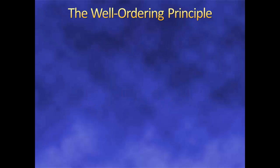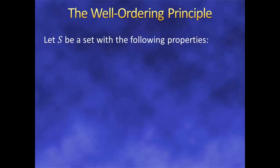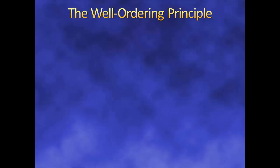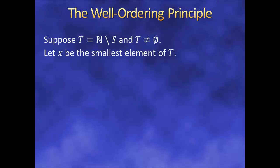Now, suppose I have a set S that follows two rules: first, it contains the number 1; and second, if x is in S, then x+1 is also in S. Then it turns out that this set must contain the entire set of natural numbers. We can prove it. We'll do this by contradiction. Suppose T is a non-empty subset of the natural numbers containing all the numbers that somehow aren't in S — in other words, it's ℕ minus S. Because of the well-ordering principle, we know T must have a smallest element. We may not know what it is, but we know it exists, so we'll call it x.